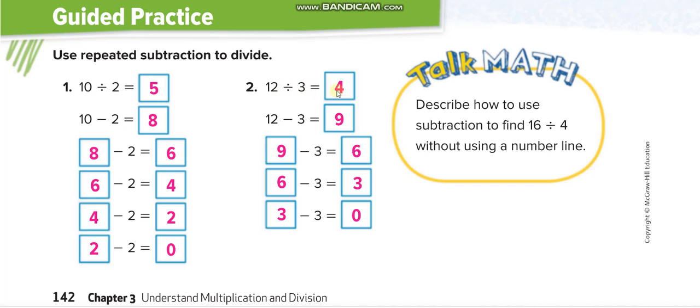12 divided by 3 is 4. Now relating it with subtraction. Continuously minus 3 from 12 until you get 0. 12 minus 3 is 9. 9 minus 3 is 6. 6 minus 3 is 3. And 3 minus 3 is 0. So how many terms? 1, 2, 3, 4. 4 is our answer and we already know it.